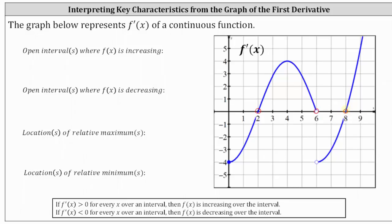Now to determine the intervals where the first derivative is positive as well as negative. The derivative function is negative over the open interval from 0 to 2, and also negative over the open interval from 6 to 8. The derivative function is positive over the open interval from 2 to 6, and also positive over the interval from 8 to infinity.